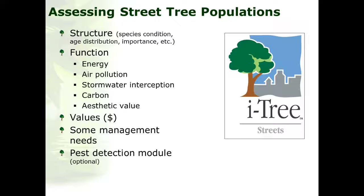iTreeStreets provides information on energy conservation, air quality improvement, stormwater control, carbon sequestration and storage, and aesthetic value. It also provides estimates of monetary values for those services and information on management needs. There is also an optional pest detection component which can be used in iTreeStreets.